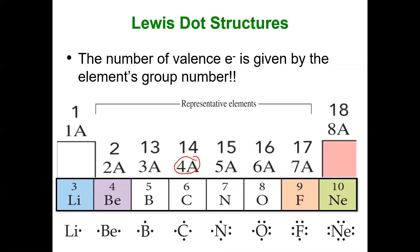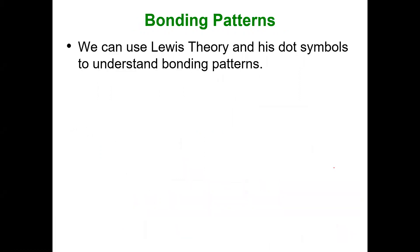Now remember, carbon has four valence electrons, but it wants to be like neon, so it needs four more electrons. Nitrogen needs three more, and we can just count over one, two, three. Oxygen needs two more. Fluorine needs one more. So that's very powerful, and we can use that by understanding bonding patterns.